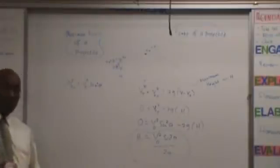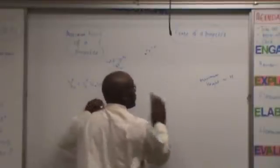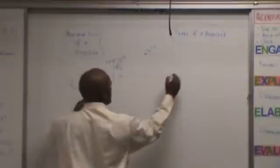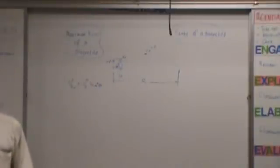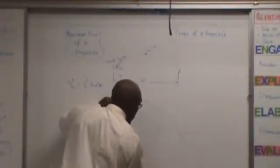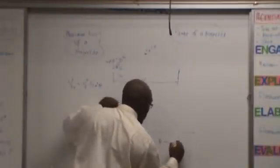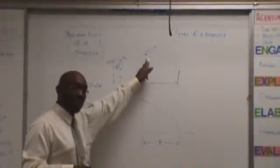Let's do the range. Do you guys know what the range is? The range is the horizontal distance from launch to landing — from here to there. If you launch a projectile at an angle, the horizontal distance to the peak is only half the range. The range is the entire horizontal distance.